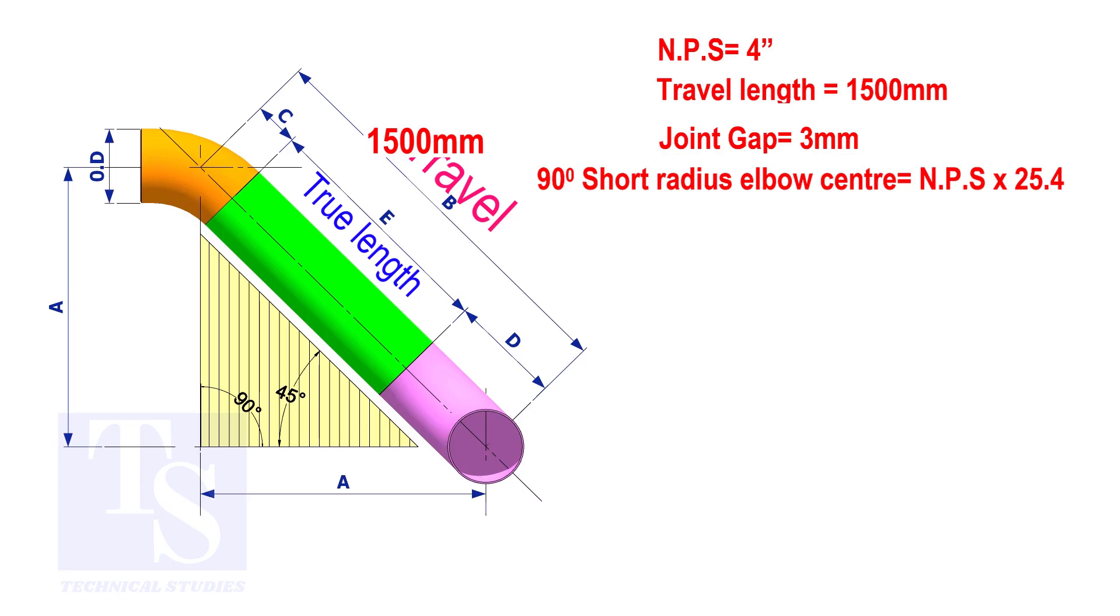To calculate the elbow center of a 90 degree short radius elbow, multiply the nominal pipe size by 25.4. The answer is 101.6 millimeters.